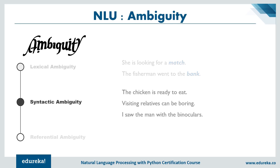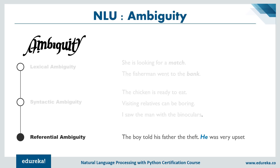Syntactical ambiguity is the presence of two or more possible meanings within a single sentence, also called structural or grammatical ambiguity. For example, 'The chicken is ready to eat' — is the chicken ready to eat food, or ready for us to eat? 'Visiting relatives can be boring' — are the relatives boring, or is visiting them boring? Referential ambiguity arises when referring to something using pronouns. 'The boy told his father about the theft. He was very upset.' — who does 'he' refer to: the boy, the father, or the thief?